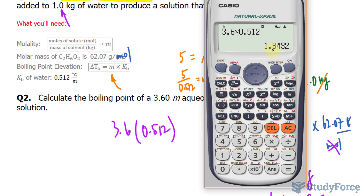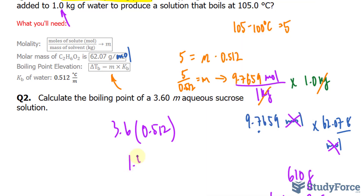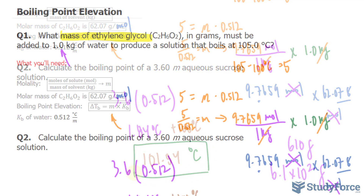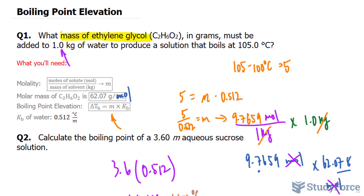We end up with 1.84, and we want this to three significant figures, so 1.84 degrees Celsius. The boiling point of water is 100 degrees, so we add 100 degrees and the new boiling point is 101.84 degrees Celsius. And there you have it — two examples related to boiling point elevation.